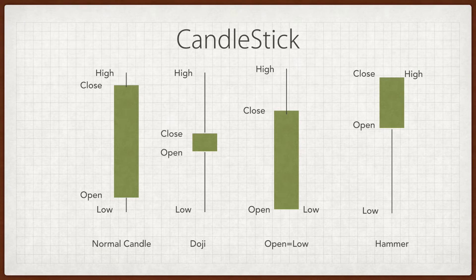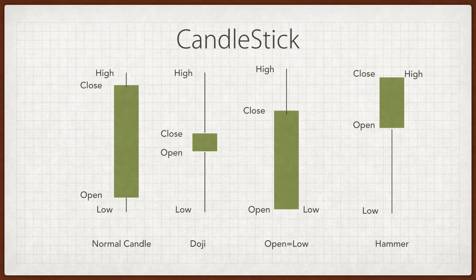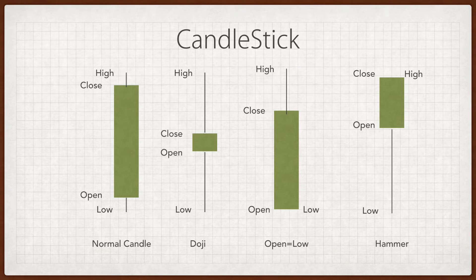Then there is a doji, which signifies a lot of momentum from both buyers as well as sellers. For example, the stock opened at 100, a few traders took the share to 110, then sellers came in — people who think the share will not move forward — and they shorted it, bringing it down to 95 as the low. Finally, more investors came and picked the share up, closing it at 101. That created a doji.